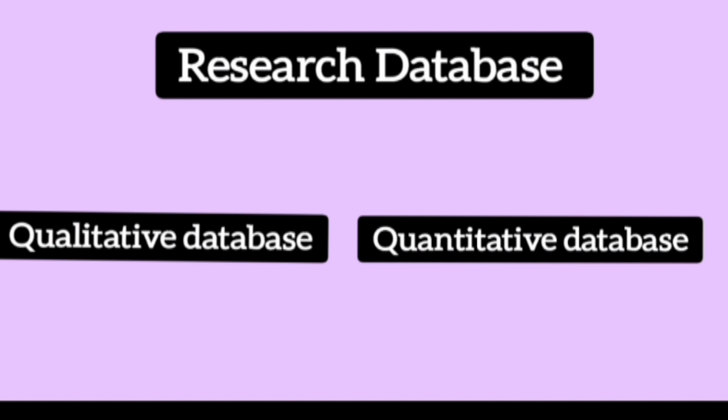When you start your PhD research, there are two types of research databases you need to look for. The first one is the qualitative database, and the second one is the quantitative database. The qualitative database is also known as the bibliographic database. In qualitative databases, you look for literature reviews, research papers, and articles to write up your research. The quantitative database is basically the numeric database from where you can extract data for doing analysis.